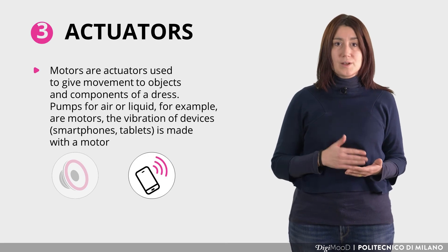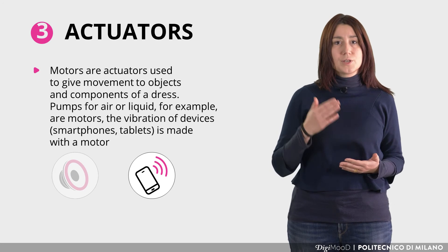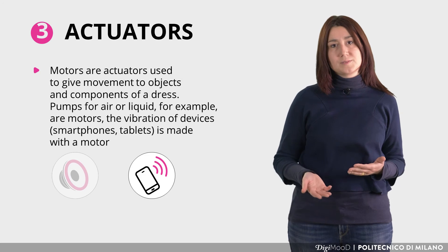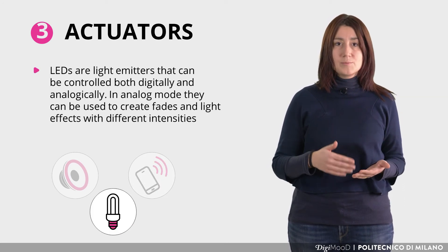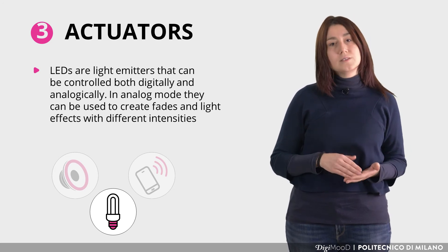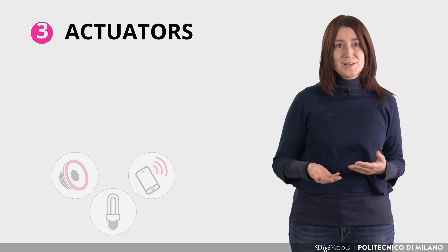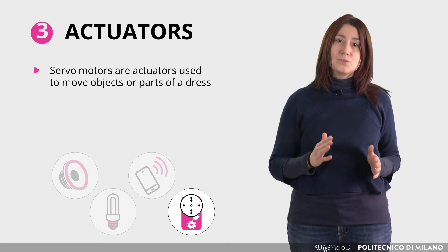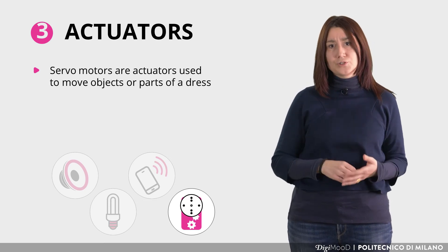Secondly, motors are the most versatile component among wearable actuators — you can use them to give movement to the whole dress or just one or more parts of it. Thirdly, LEDs are simple actuators that you can control with many signals to create different light effects or to communicate through colors. Finally, servo motors have a special electronic circuit that can do specific and precise movements, even if they have a very tiny dimension.